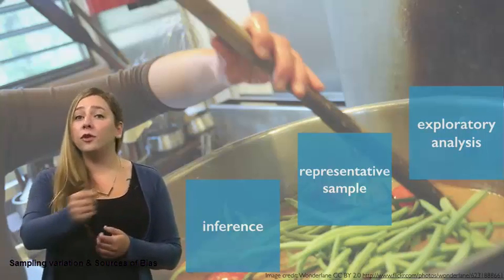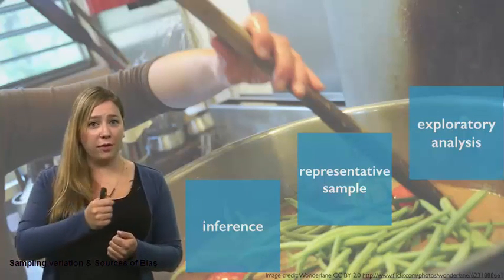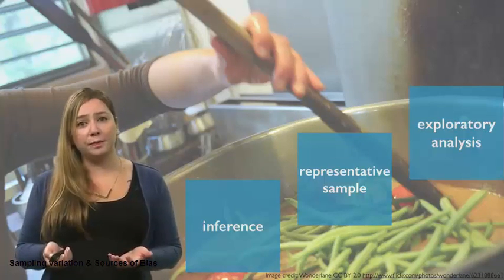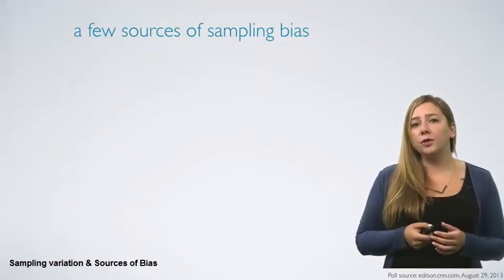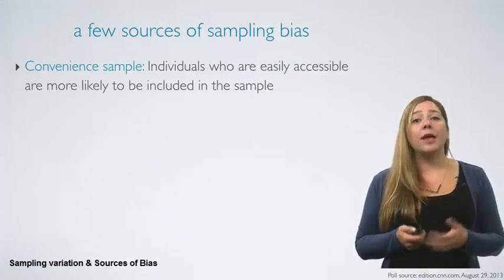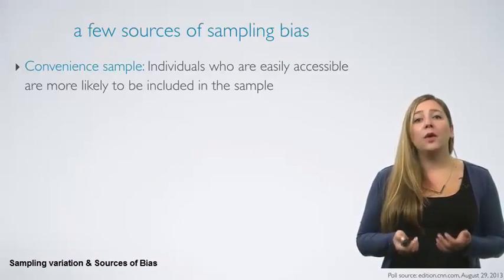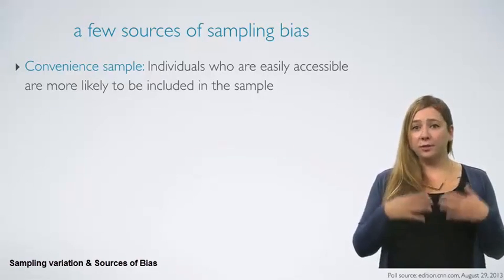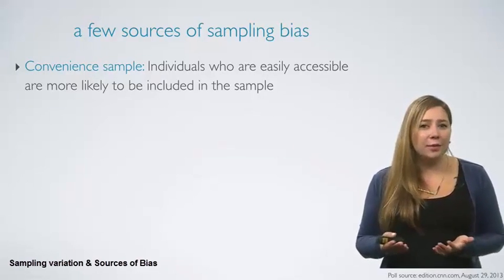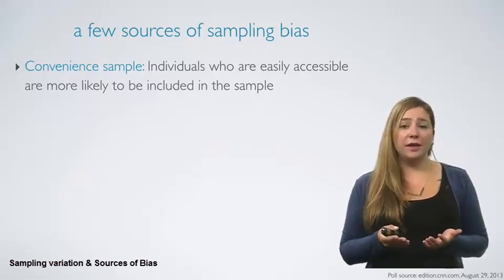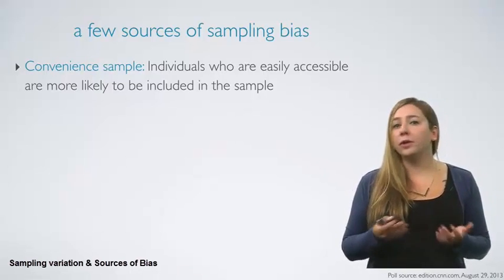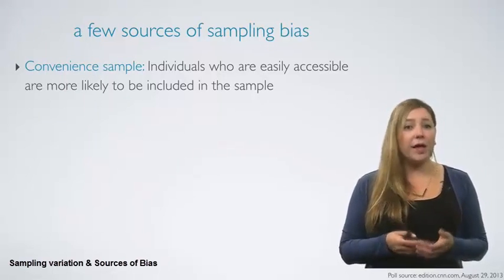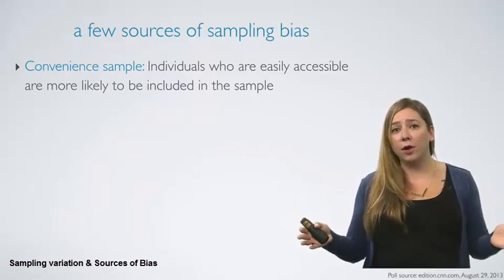On the other hand, if you first stir the soup thoroughly before you taste, your spoonful will be more likely to be representative of the whole pot. Let's review a few sources of sampling bias. Convenience sample bias occurs when individuals who are easily accessible are more likely to be included in the sample. For example, say you want to find out how people in your city feel about a recent increase in public transportation costs — if you only poll people in your neighborhood, as opposed to a representative sample from the whole city, your study would suffer from convenience bias.